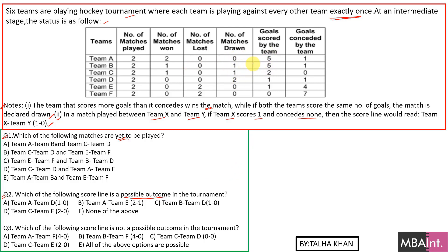Observing the table, team D has drawn both matches it has played — one with team B and one with team C. Team C has never conceded a goal, so the match between D and C would be 0-0. Team D scored one goal in total, so in its drawn match with team B, the score line would be 1-1.